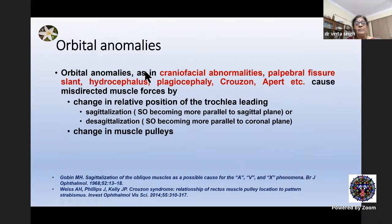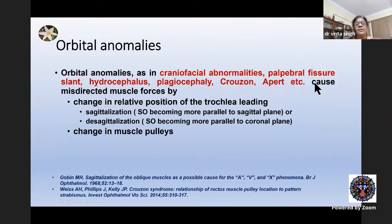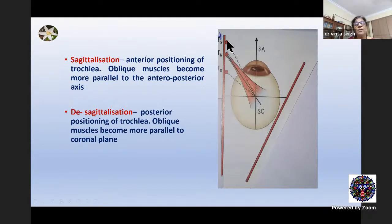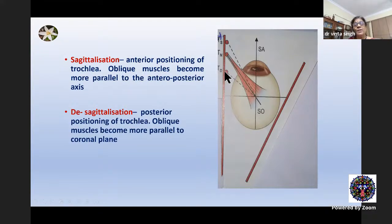Orbital anomalies — as in craniofacial abnormalities, palpebral fissure abnormalities, hydrocephalus, plagiocephaly, Crouzon, Apert's, and various craniofacial abnormalities — cause misdirected muscle forces by change in the relative position of the trochlea. This may lead to sagittalization or desagittalization of the superior oblique, and may also change the direction of muscle pulleys, causing pseudo-overactions and underactions of the oblique muscles. Sagittalization means anterior positioning of the trochlea, making the oblique muscle more parallel to the anteroposterior plane; desagittalization means posterior displacement, making it more parallel to the coronal plane, altering its action.